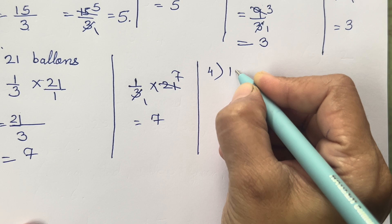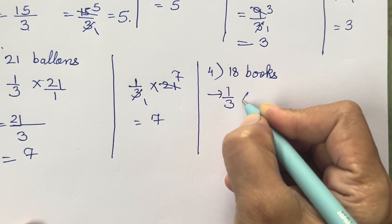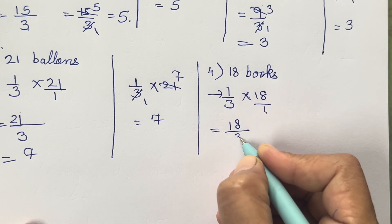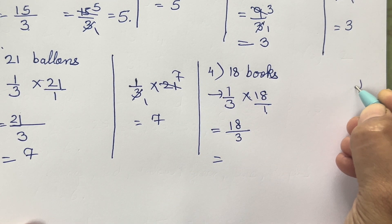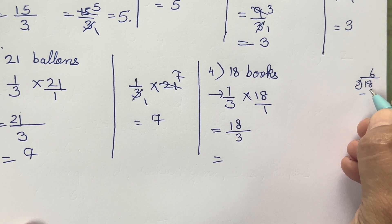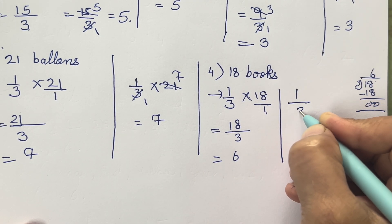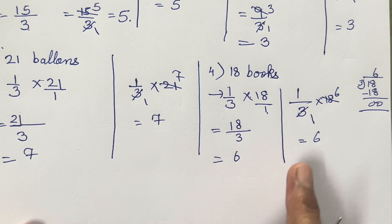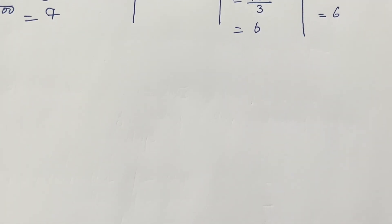Fourth sum: 18 books. So 1/3 into 18 — numerator is 18, denominator is 3. Divide: 3 sixes are 18, so your answer is 6. Using the second method: 1/3 multiplied with 18 — 3 ones are 3, 3 sixes are 18, your answer is 6. You don't have to do both methods — whichever you find easy, use that one.